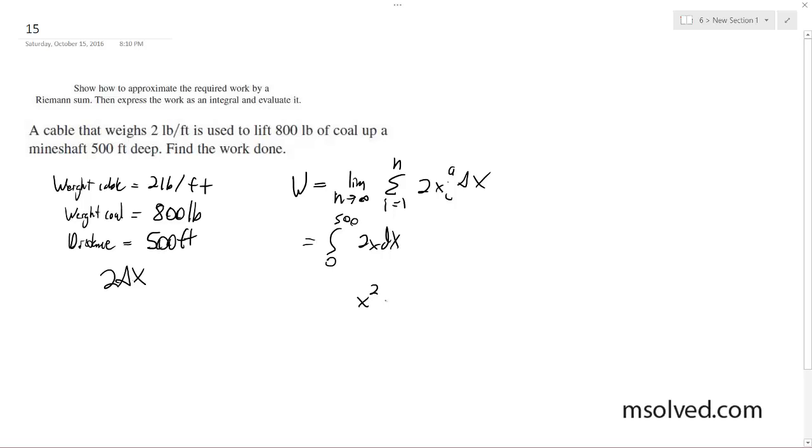Integrate this, we have x squared from 0 to 500, and we get 250,000 foot pounds.